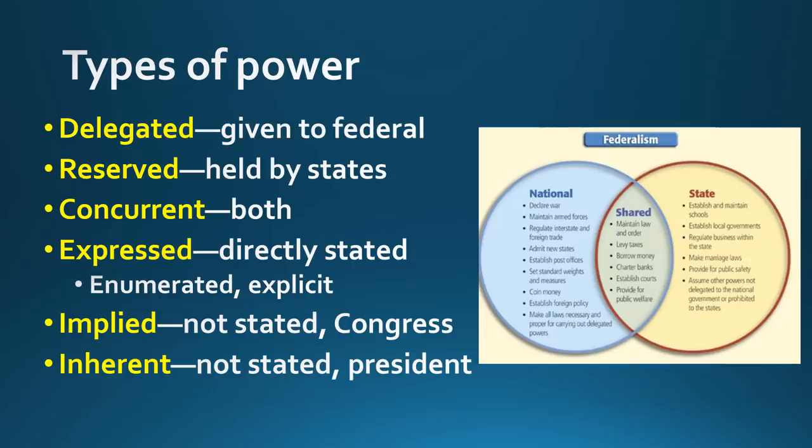Here are a list of powers — this is just vocab you have to know. Delegated powers are given to the federal government. Reserved powers, in the 10th Amendment, are kept or held by the states. Concurrent powers — things like taxing and borrowing money — are things that both state and federal governments can do. So: delegated is federal, reserved is states, concurrent is both.